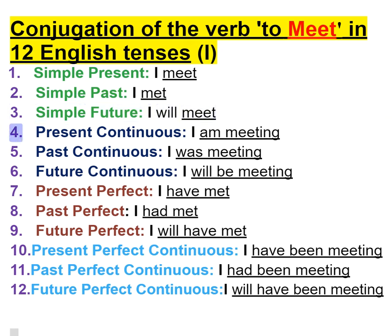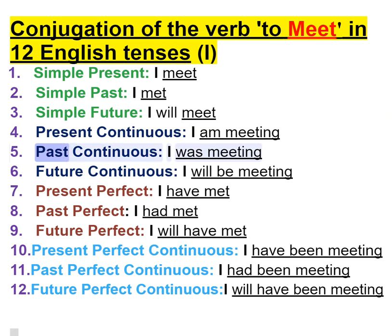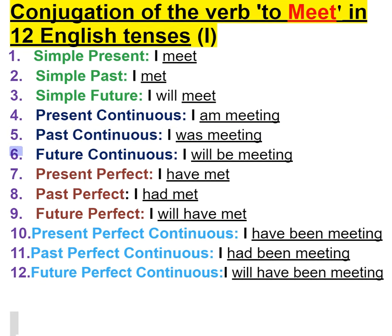4. Present continuous — I am meeting. 5. Past continuous — I was meeting. 6. Future continuous — I will be meeting.